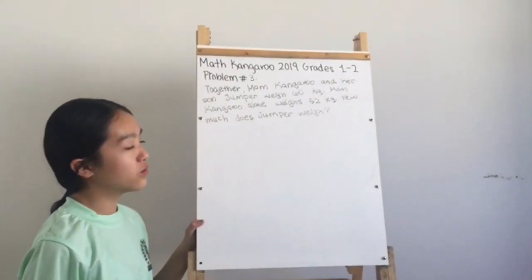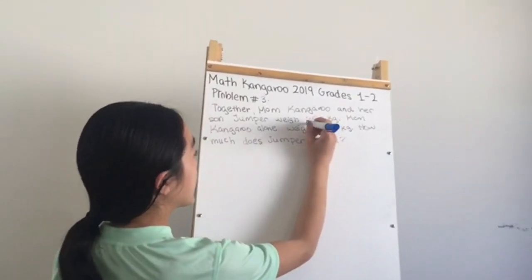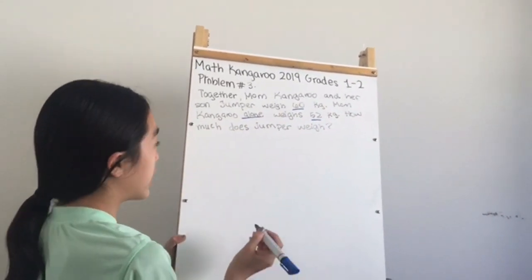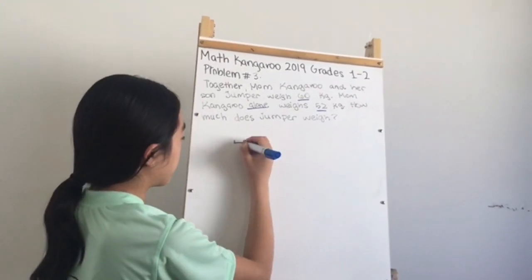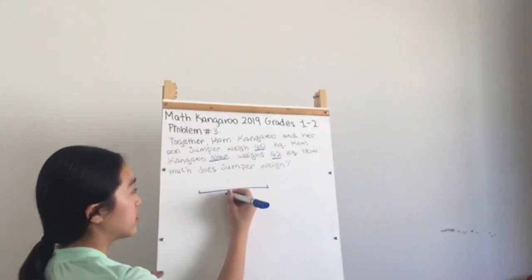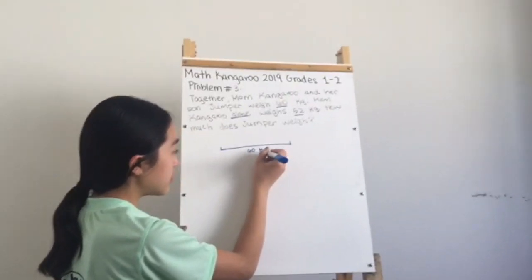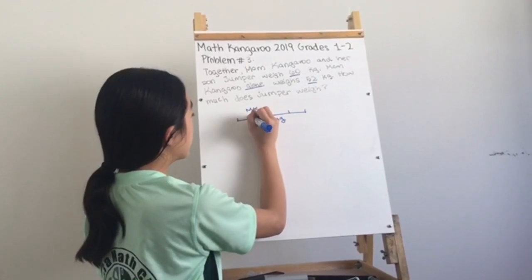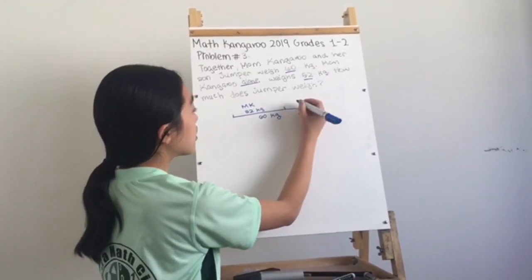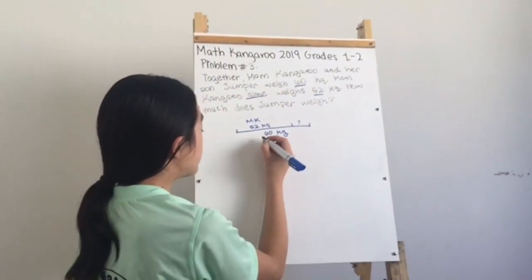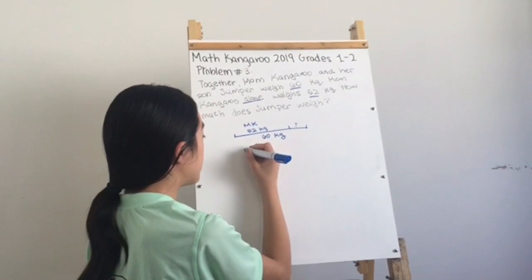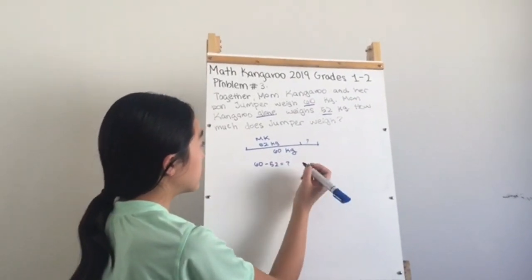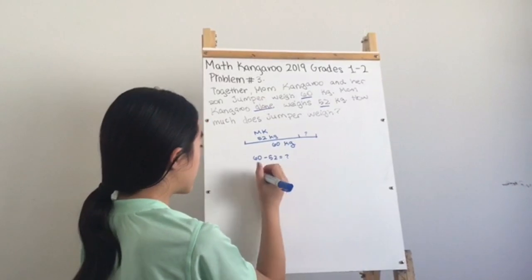Problem number three: together, mom kangaroo and her son Jumper weigh 60 kilograms. Mom kangaroo alone weighs 52 kilograms. To solve this, the equation is 60 minus 52, which equals 8 kilograms — Jumper's weight. The answer is C.